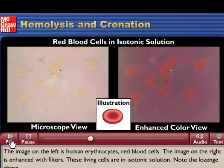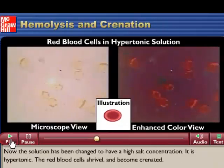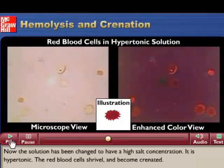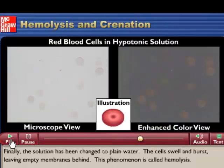Note a lozenge shape. Now the solution has been changed to have a high salt concentration. It is hypertonic. The red blood cells shrivel and become crenated. Finally, the solution has been changed to plain water. The cells swell and burst, leaving empty membranes behind. This phenomenon is called hemolysis.